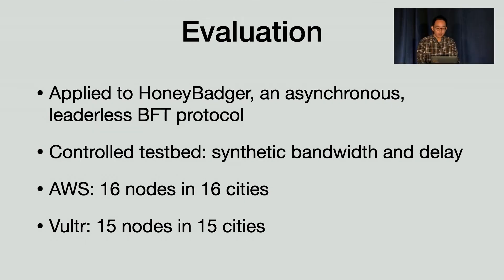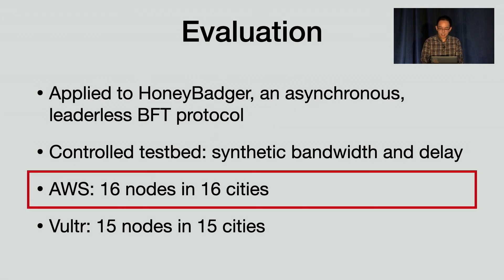We applied our idea on an existing BFT protocol called Honey Badger, and we call our new protocol Dispersed Ledger. We implemented it in 8,000 lines of Go and tested it in three scenarios: a testbed with synthetic bandwidth and delay, 16 nodes on AWS, and 15 nodes on Vultr, a low-cost cloud provider. In this talk, I'll focus on the results from AWS.